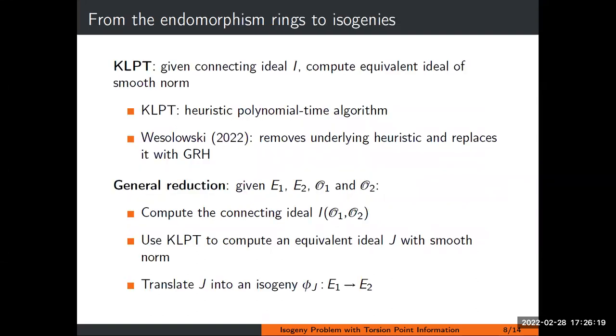I'll give you a brief discussion of how the reduction from endomorphism computation to isogeny computation works. In the quaternion setting, finding a connecting ideal is easy. However, if you want to translate into an isogeny setting, you need one with smooth norm. This is exactly what the algorithm of Kohel, Lauter, Petit, and Pignol, abbreviated KLPT, does. It takes a connecting ideal and computes an equivalent ideal with smooth norm. This is a heuristic polynomial time algorithm, and recently Wesołowski showed you can remove the underlying heuristic and replace it with the generalized Riemann hypothesis.